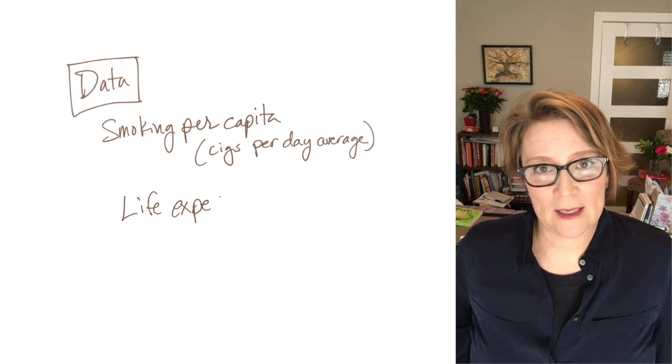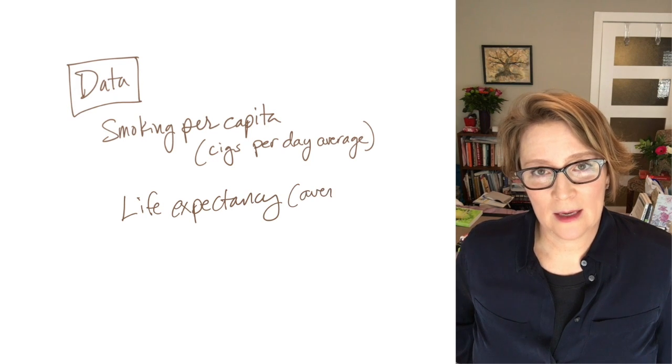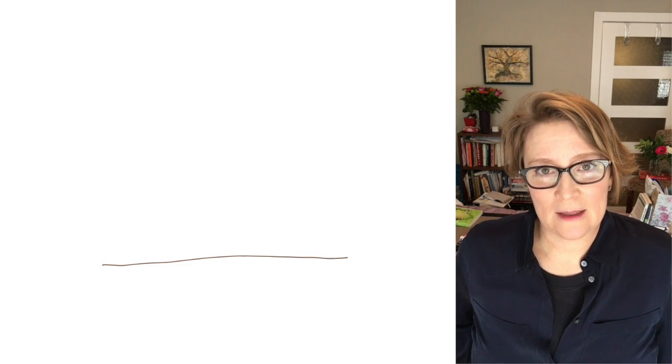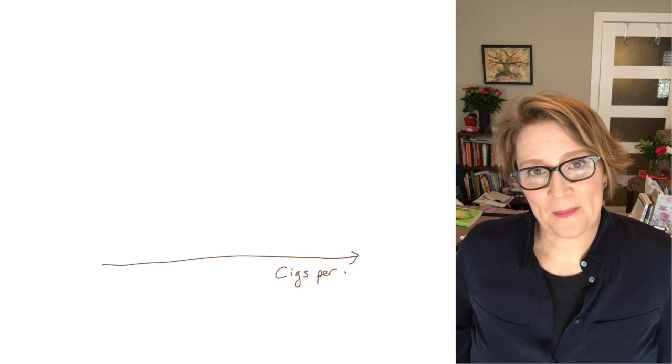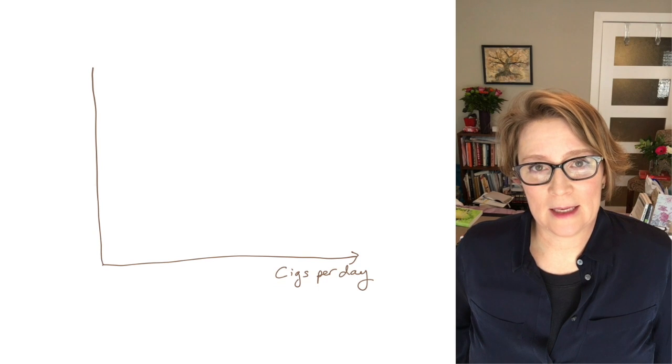So we can take those two data sets and make a good plot where the horizontal axis is the average cigarette consumption per day and then the vertical axis is the average life expectancy.